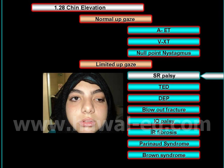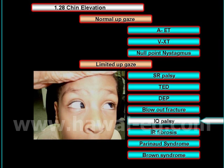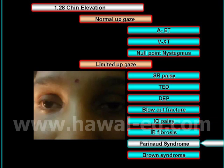If there is limitation of elevation of one or both eyes, we perform the force duction test to differentiate between paralytic causes, which give a negative force duction result, and restrictive causes, which give a positive force duction result. Negative causes include superior rectus palsy, double elevator palsy, or inferior oblique palsy.